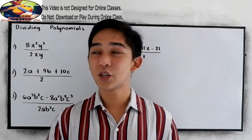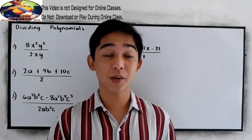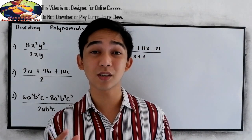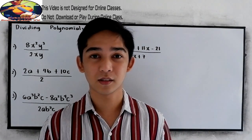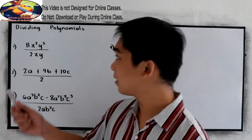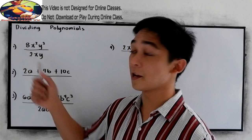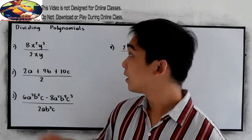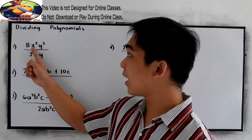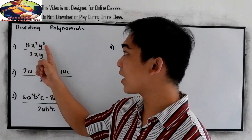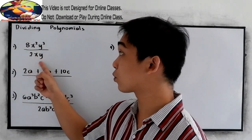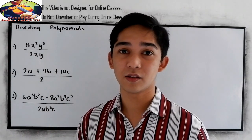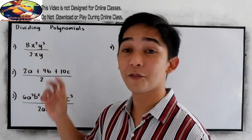So in dividing polynomials, we can apply the rules in our laws of exponents. For number 1: 8x squared y cubed over 2xy. So we need to divide.